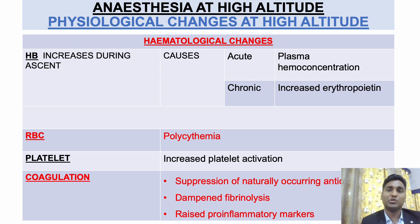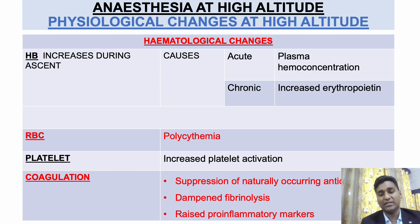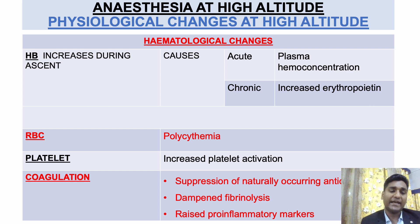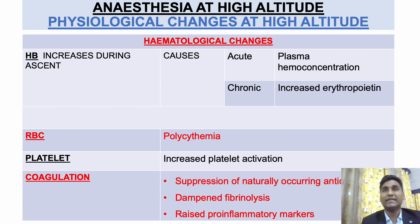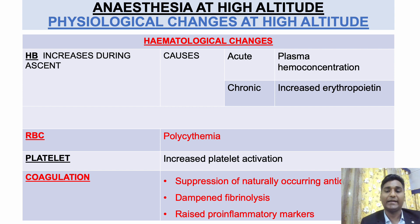On ascent to higher altitudes, there are increased hemoglobin levels mainly due to plasma hemoconcentration, and secretion of erythropoietin which increases red blood cell count, leading to polycythemia. Along with increased Hb and polycythemia, viscosity increases and beyond a certain level, oxygen supply to the tissue is hampered. Platelet activation is increased and the anticoagulation system is suppressed, leading to increased susceptibility to DVT, PE, CVT, and arterial thrombosis like stroke and MI compared to lowlanders.